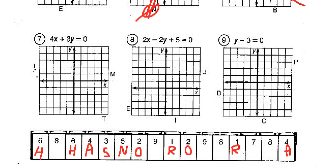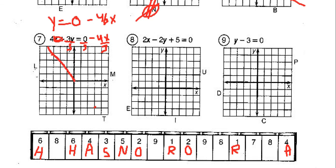Number 7 — home stretch. Subtract 4x from both sides and divide by 3. That gives us y = 0 - (4/3)x — a negative slope here, so we're intercepted at 0. We've got -4/3 x, and that will give us down 4 over 3, right through the T. So number 7 is going to be T.